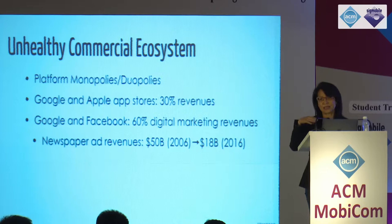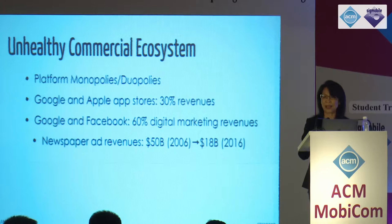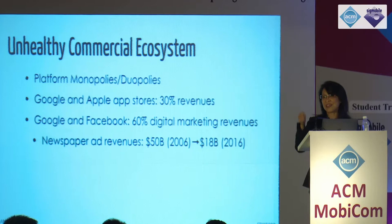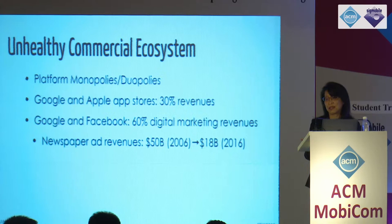This has implications across many fields. If you just look at journalism, newspaper ad revenues went down from $50 billion in 2006 to $18 billion in 2016. Who is paying all these journalists? Are we really surprised that we have fake news? What people have created is a propaganda machine that anybody can pay to get their messages sent to individuals based on personal information. These monopolies are terrible for consumers — they drive away open competition and innovation.